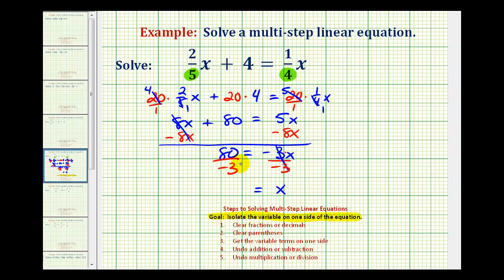And eighty and three do not have any common factors so we can express this in a couple of ways. If we want to leave it as an improper fraction or in fraction form it would just be negative eighty-thirds. Which is probably how you would see the solution listed.